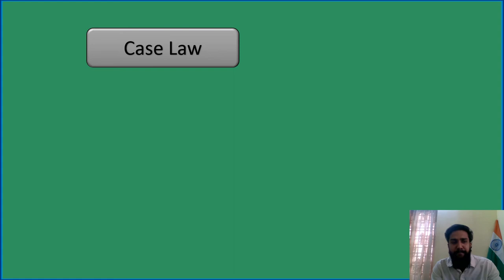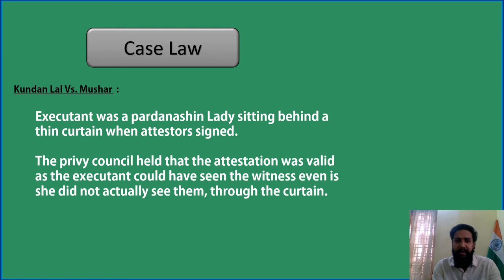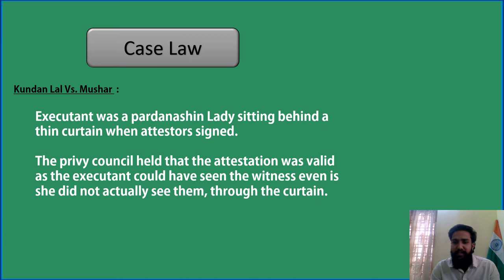Let's look at some case laws. The first case is very important: Kundenlal versus Musher. Here, the executant was a purdah-wearing Muslim lady sitting behind a thin curtain when the attestation was signed. The property belongs to a Muslim lady who was wearing a purdah on her face — a thin curtain — and the attestation was signed and she transferred the document. She went to the court saying that she did not see the attester.